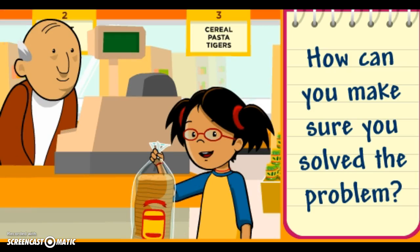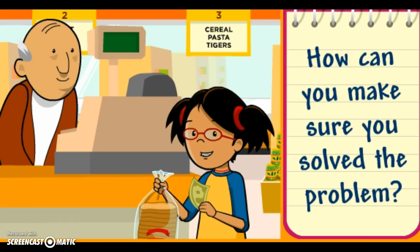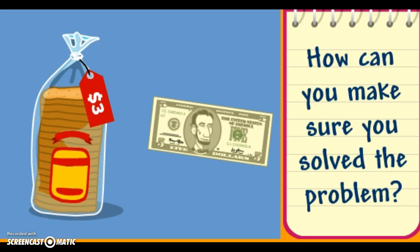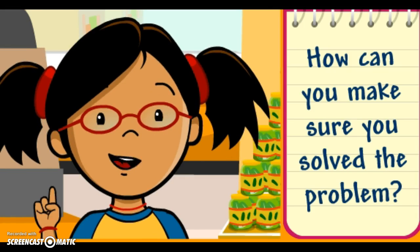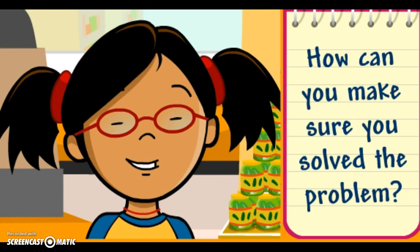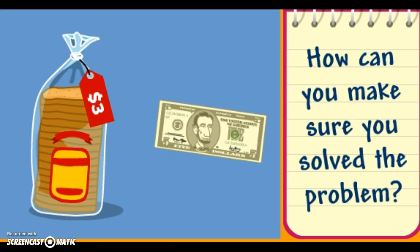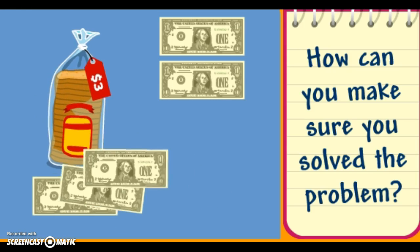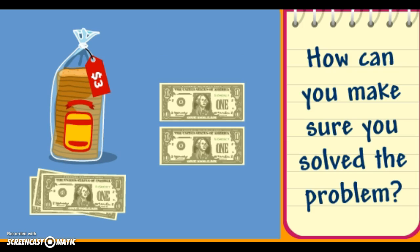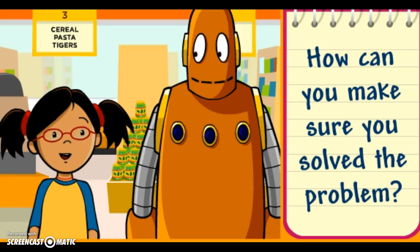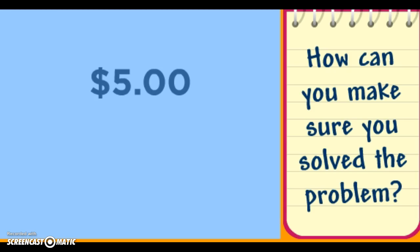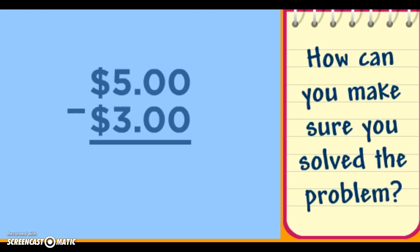This loaf costs $3. I'm paying with a $5 bill. How much change should I get back? First, understand the problem — I need to know how much money I should get back. Second, make a plan to solve. I'm going to use mental math as my strategy. I have a $5 bill, which is equal to five $1 bills. The bread costs $3, so that means I should get $2 back. Now I need to check my work. I can write a number sentence to check: $5 minus $3 is equal to $2.